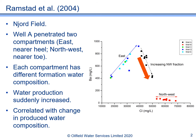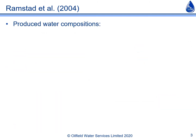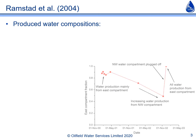At the time the authors did not know the actual formation water barium and chloride concentrations at this well location for each of the compartments, but from the produced water trends it was possible to constrain both compositions. These estimated compartment formation water compositions and the produced water compositions for well A allowed produced water to be allocated between the compartments.